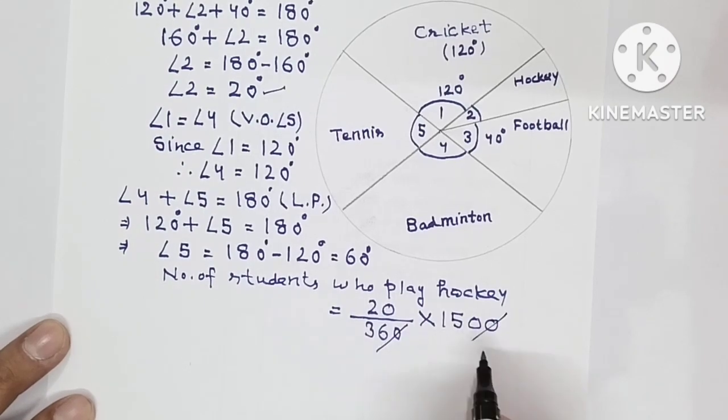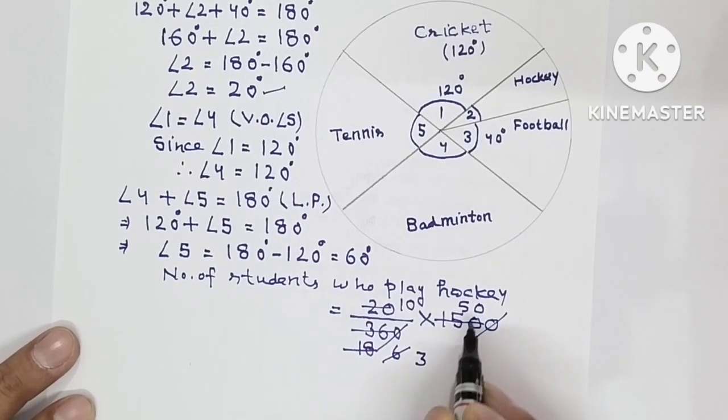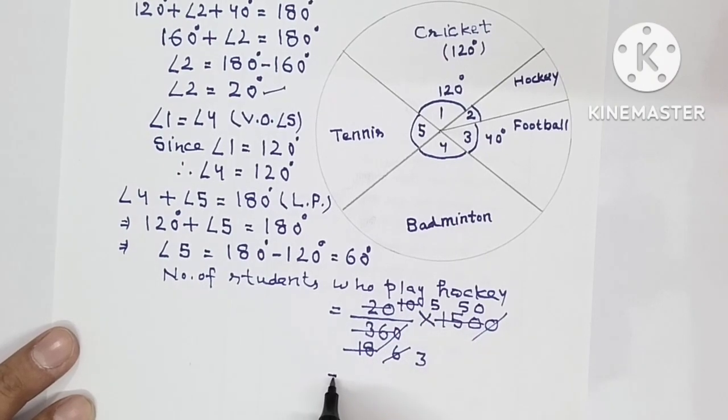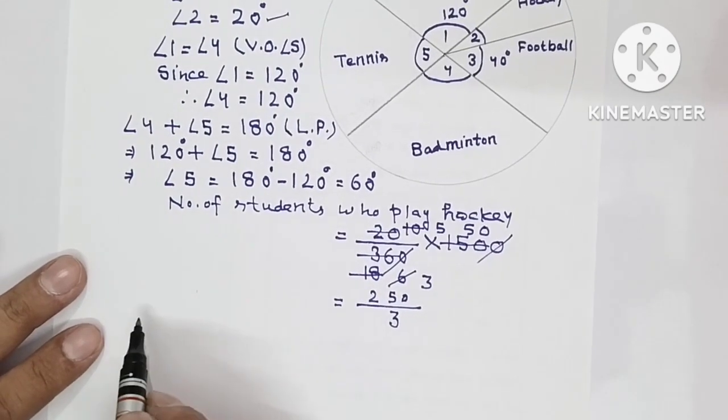So multiply. Zero cancels with zero. This is two ones are two and zero. Here will come eighteen. Then three sixes are eighteen, three fives are fifteen and zero, two threes are six and two fives are ten. So fifty into five becomes 250 upon three, 250 upon three.